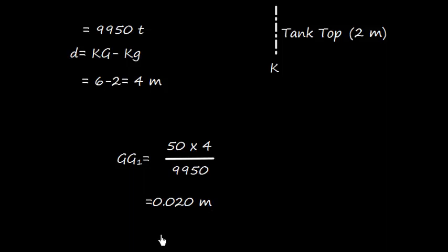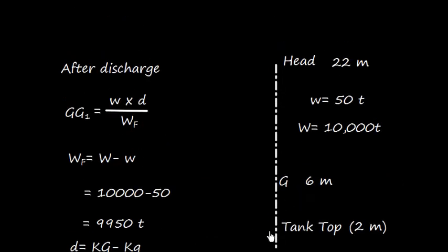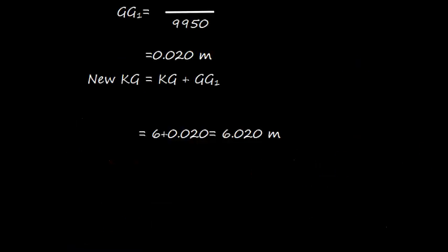So we get this value, 0.020 meters. Well, the new KG is going to be KG plus GG1. It makes sense also because we are discharging from the bottom, so the top is heavy. My G will shift like this, GG1 in this direction, so the new KG will be 6 plus 0.020, that is 6.020 meters.